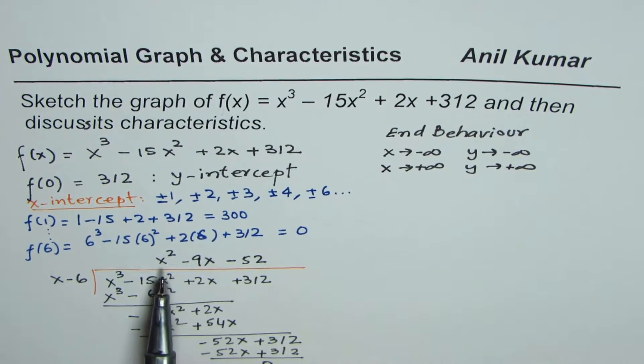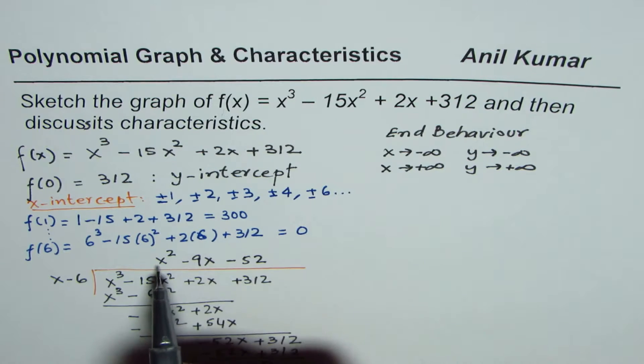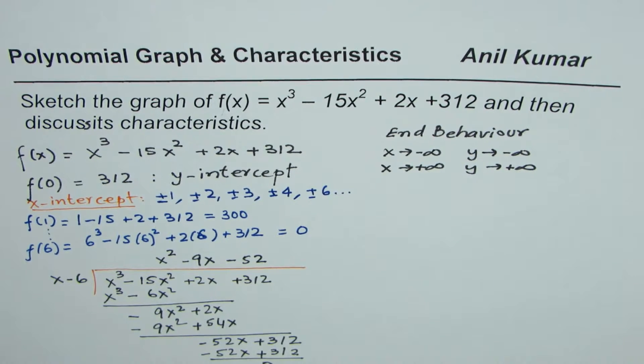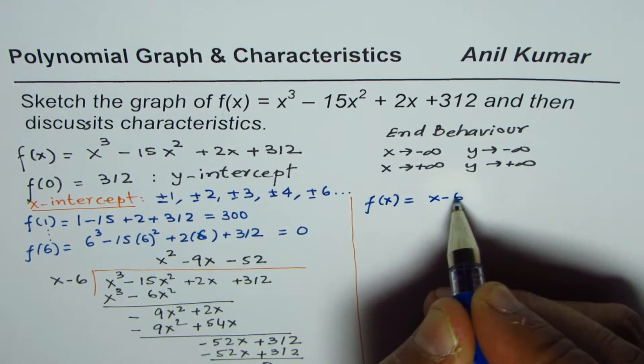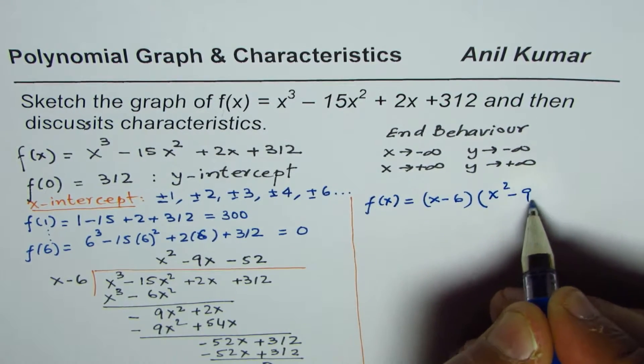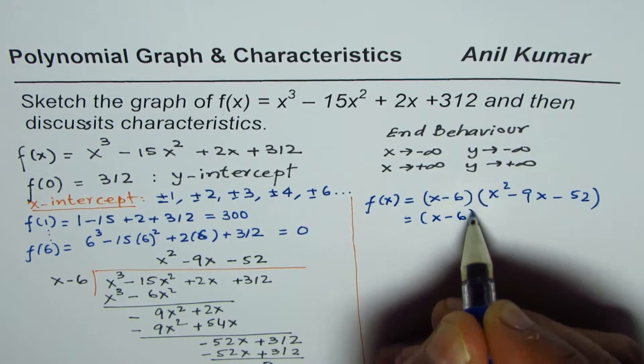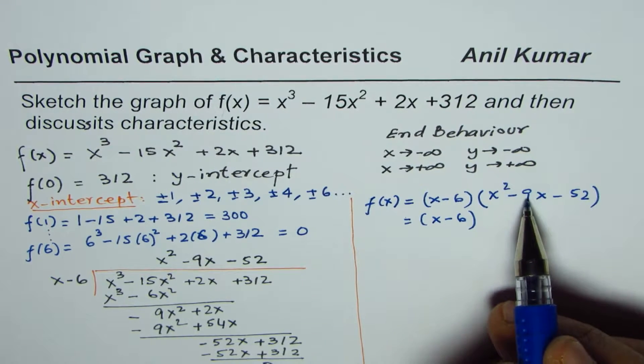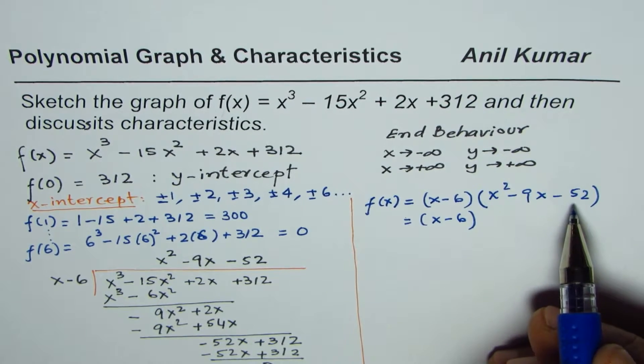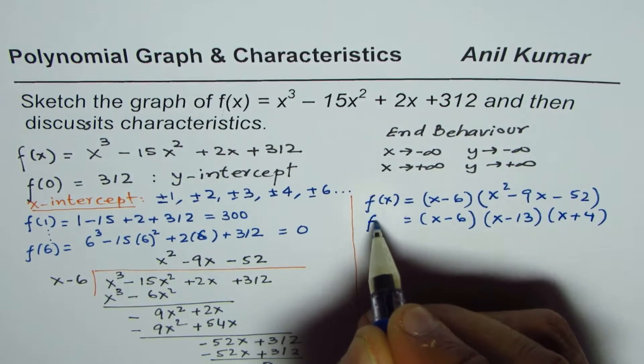But what you really got here is another factor. So one of the factors is x - 6. And now we have a quadratic equation, which is x² - 9x - 52. So what we can do here is write down the equation in the factored form. So we have f(x) = (x - 6)(x² - 9x - 52). Now this is a quadratic equation. Since the coefficient is 1, we just need product and sum. Product of -52, sum of -9. Now factors of 52, 13 times 4. So x - 13 times x + 4 is how you could factor this.